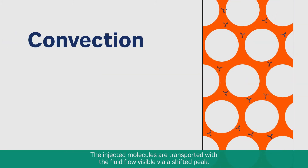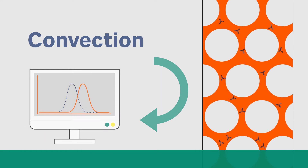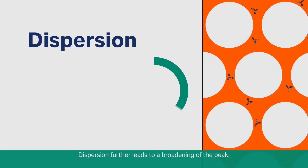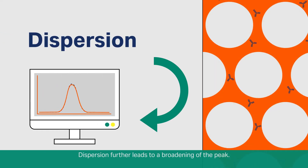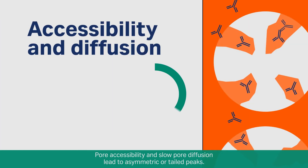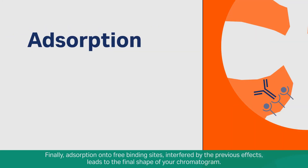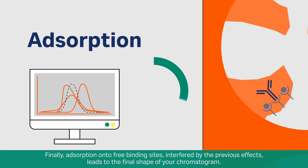The injected molecules are transported with the fluid flow, visible via a shifted peak. Dispersion further leads to a broadening of the peak. Poor accessibility and slow pore diffusion lead to asymmetric or tailed peaks. Finally, adsorption onto free binding sites, interfered by the previous effects, leads to the final shape of your chromatogram.